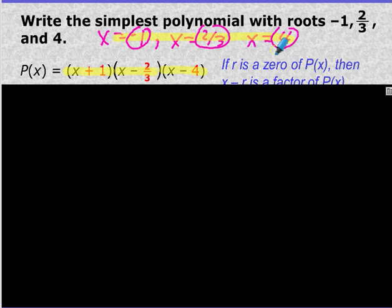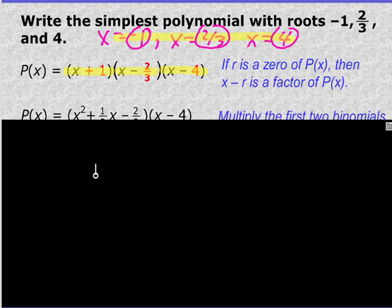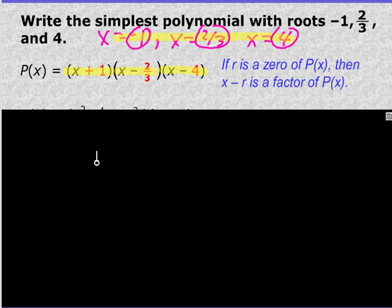So you're going to start from the roots, you're going to get to your factors, and then from here, we're just going to FOIL. We're just going to do the multiplication. So you're going to start by foiling the first two factors, so x times x is x squared, x times negative 2 thirds is negative 2 thirds x, 1 times x is x, and then 1 times negative 2 thirds is negative 2 thirds.